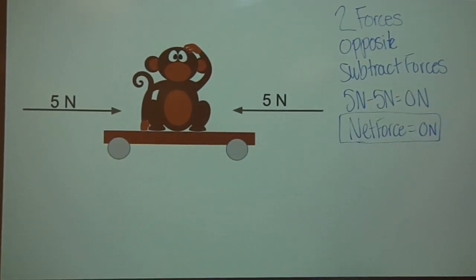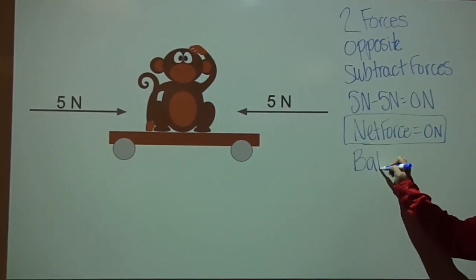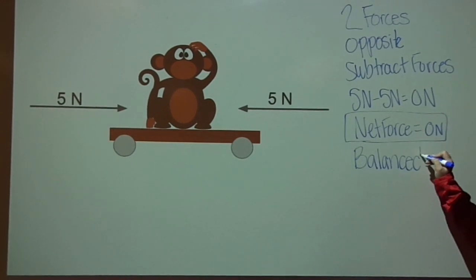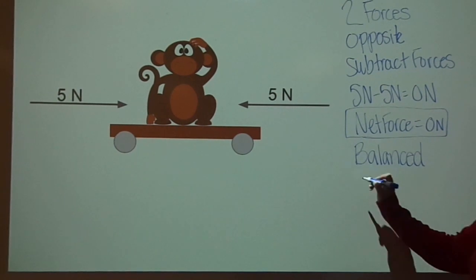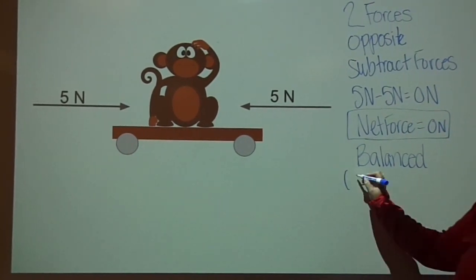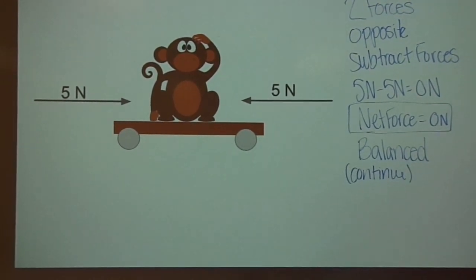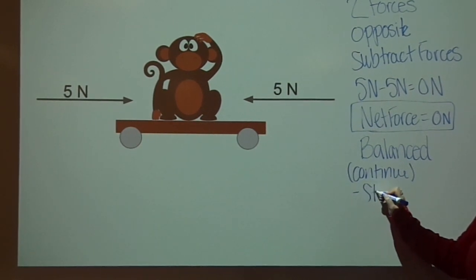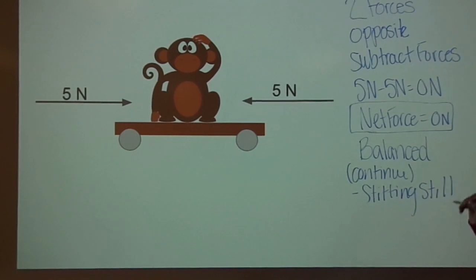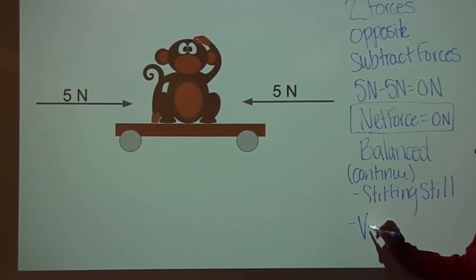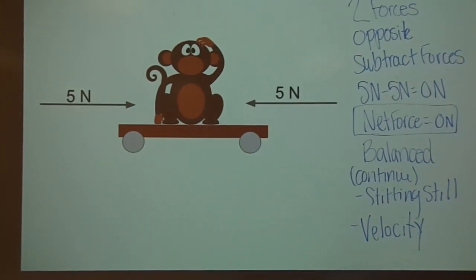Anytime we have a net force that equals 0 newtons, we can see that this force is balanced. What does that mean? It means that the object will continue doing what it's doing — it can either be sitting still and stay sitting still, or it will continue at the same velocity, meaning the same speed and direction.